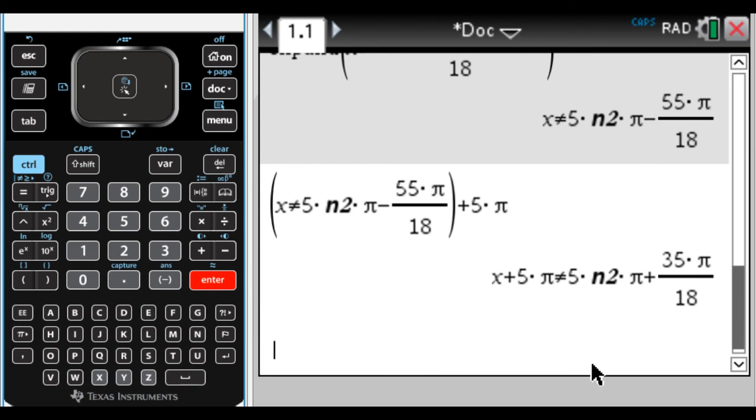And so the answer I would write is, for the domain, x is an element of the reals, x is not equal to 35π over 18 plus 5πn, where n is an element of the integers.